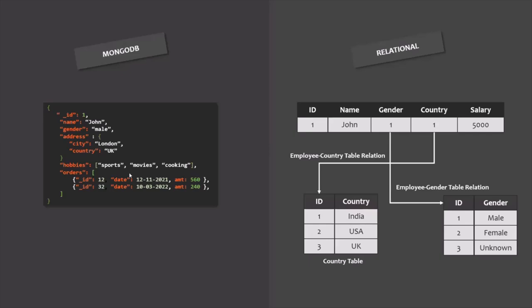Because all related data is present in the same document, we do not need to query multiple collections. In a relational database, to get employee data with gender and country, you would need to do joins between the employee, country, and gender tables — querying three tables to get the proper data. But in MongoDB, we only need to query one collection to get all the related data. This is what makes NoSQL databases like MongoDB high-performant.